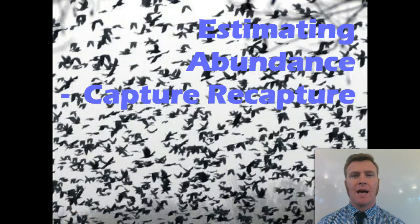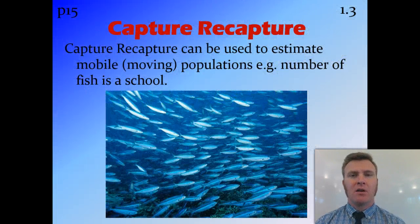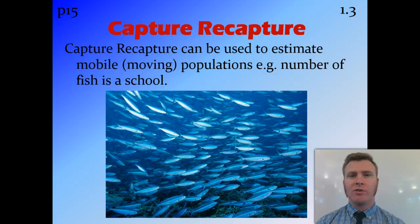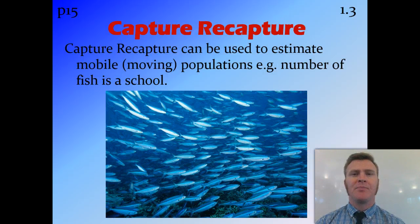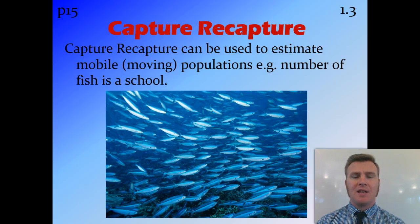In this video, we're going to look at estimating abundance by using the capture-recapture method. In the previous video, we looked at estimating abundance using random quadrants, which are fine for a population that is stationary, like plants. But when populations move around, or are mobile, we need another method — and in this case, we use the capture-recapture method.